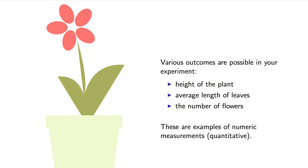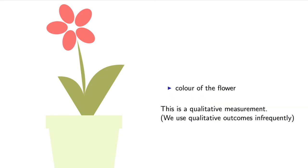In most experiments, the outcome is a number, a quantitative measurement. But a qualitative measurement is also possible. For example, perhaps the outcome is the color of the flower—light red, red, or dark red. That's a qualitative measurement, a description of what happened.